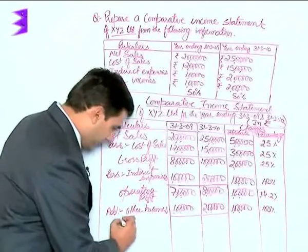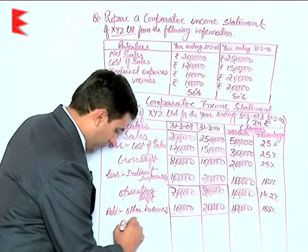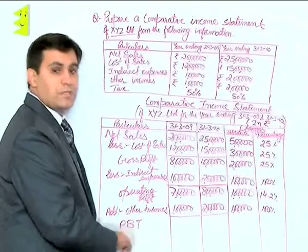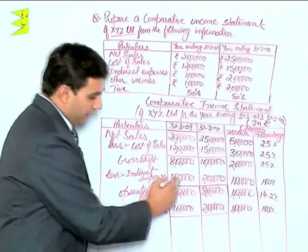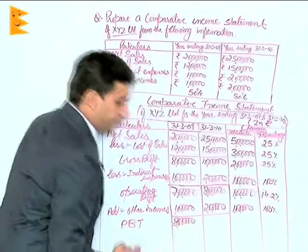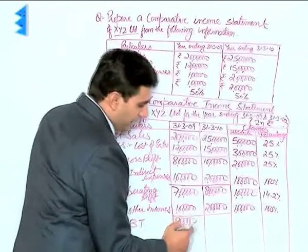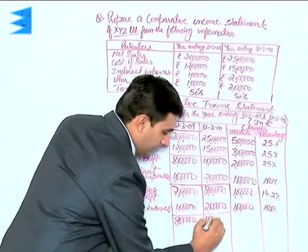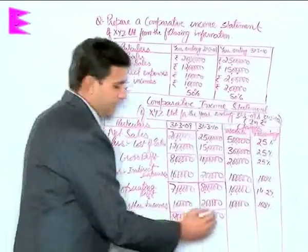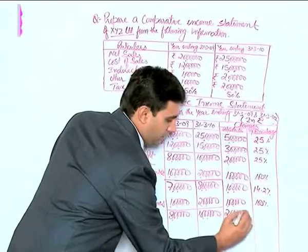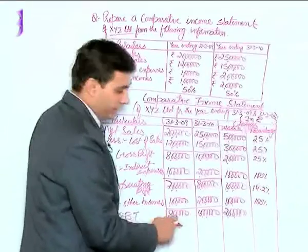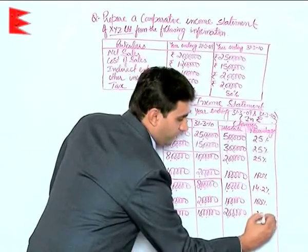Once we add other incomes, we get profit before tax, abbreviated as PBT. For the previous year it is 7 lakhs plus 1 lakh, which is 8 lakhs. For the current year it is 8 lakhs plus 2 lakhs, which is 10 lakhs. The absolute change is 10 lakhs minus 8 lakhs, which is 2 lakhs, and the percentage change is 2 lakhs divided by 8 lakhs into 100, which is 25 percent.